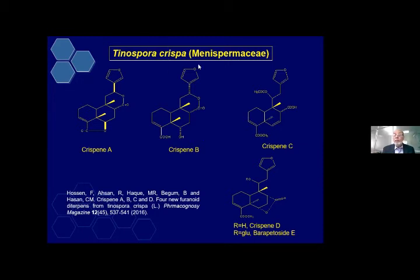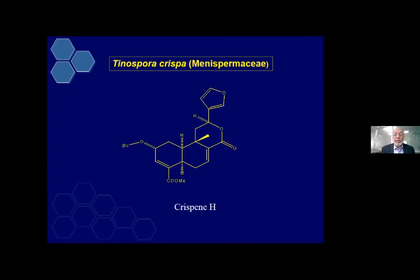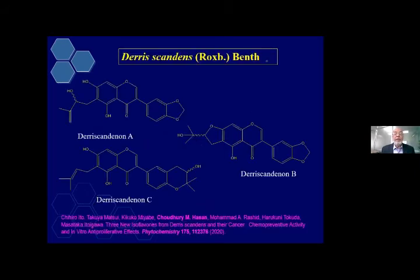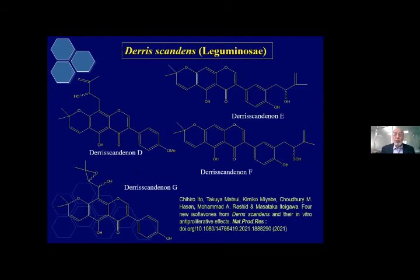Then more from Tinospora crispa — Crispin H, and the series compounds were given trivial names: Crispin A, B, C, D, F, G, H, like this. Then from Tinospora scandens, we isolated two or three isoflavone compounds and published in Phytochemistry, also working with Japanese counterparts. More compounds isolated from this same plant and published in Natural Product Research.